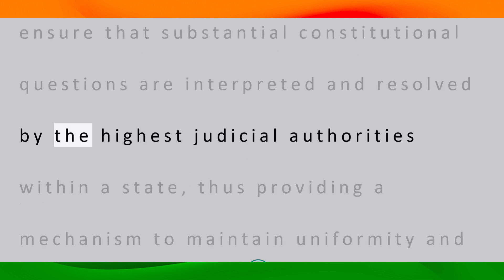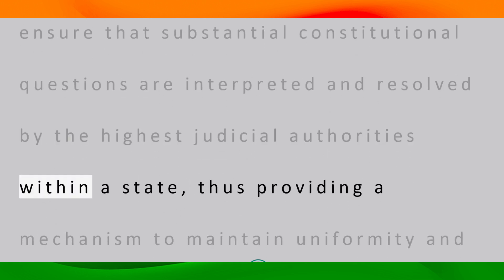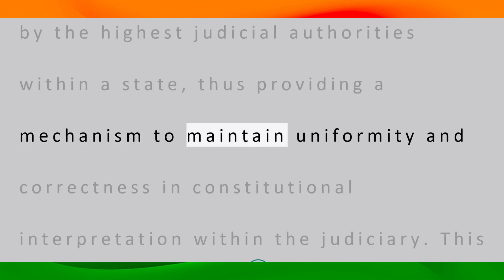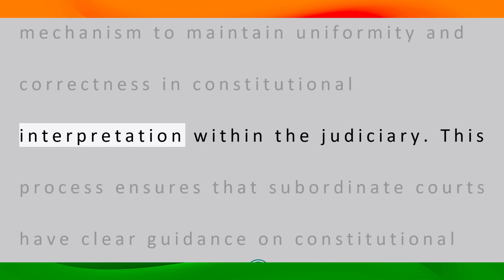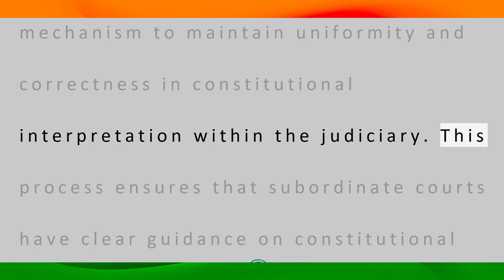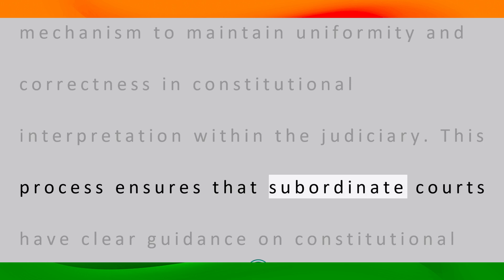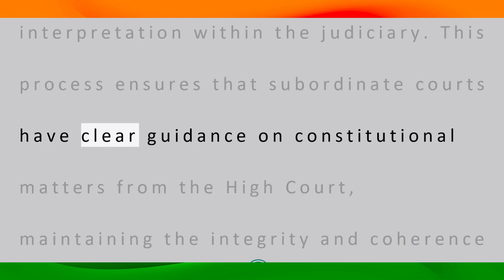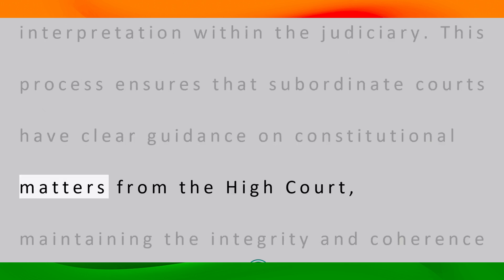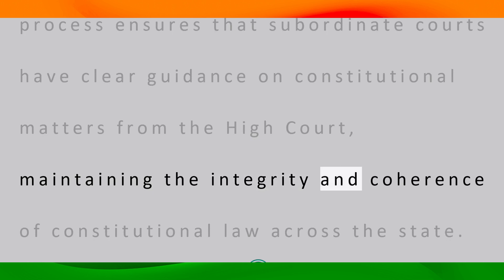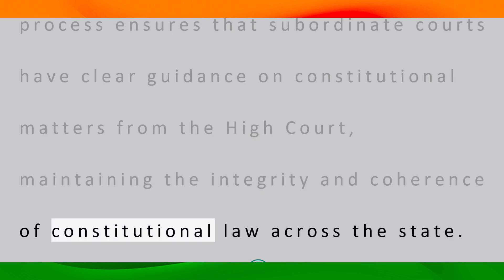Summary: Article 228 empowers High Courts to ensure that substantial constitutional questions are interpreted and resolved by the highest judicial authorities within a state, thus providing a mechanism to maintain uniformity and correctness in constitutional interpretation. This process ensures that subordinate courts have clear guidance on constitutional matters from the High Court, maintaining the integrity and coherence of constitutional law across the state.